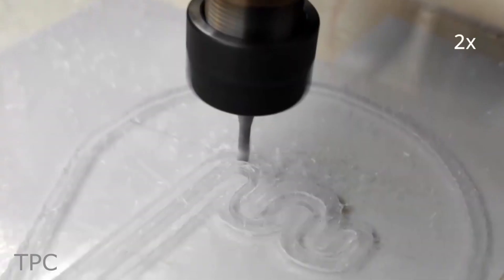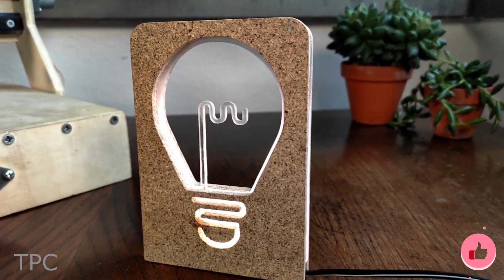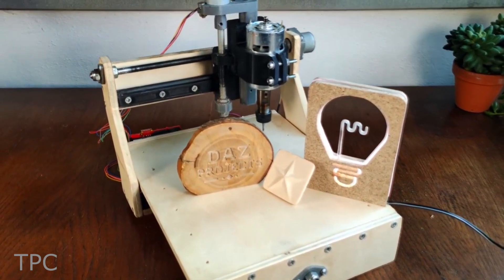For the spindle, it uses a 775 motor, which is a good option if you want to engrave wood and plastic. But don't try to test this machine by cutting metal.